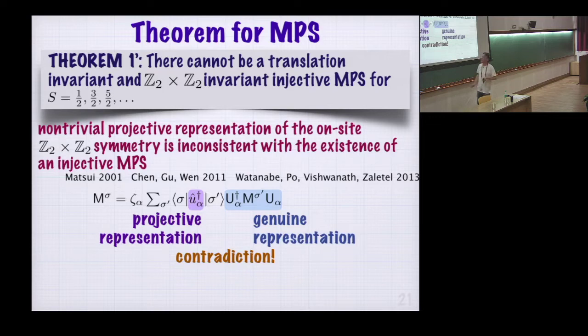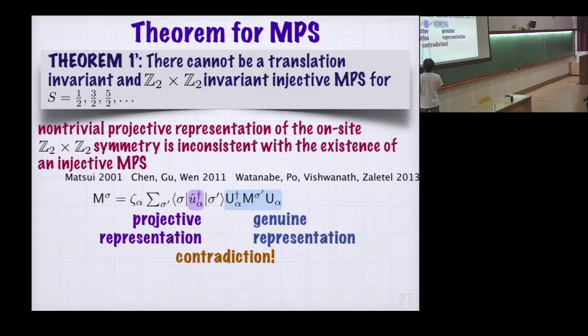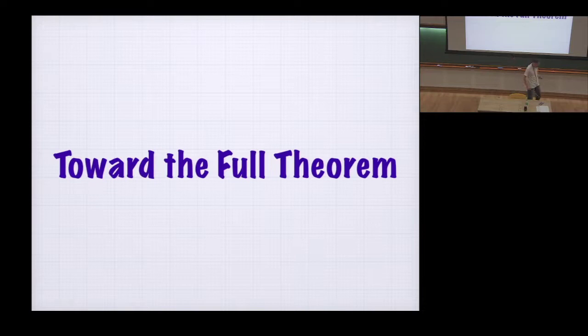The essence goes back to Matsui. The key is this single relation for M: the matrix M that defines the matrix product state has a projective representation on one side and a genuine representation of Z2 cross Z2 on the other. In a single identity, projective and genuine representations both appear, and this leads to contradiction.